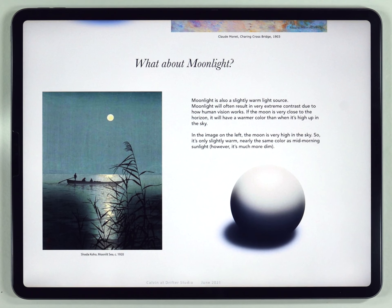Now moonlight is also misunderstood. Basically, moonlight is a warm light — a very, very slightly warm light. That's because the moon is getting its light from the sun; the sun is reflecting off the moon, and we're seeing the dim reflection of that warm sunlight. The same principle applies — except, much like in the case of a sunset, you have some extreme contrast, but the shadows will still typically be cold under moonlight.